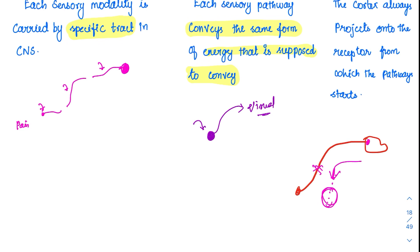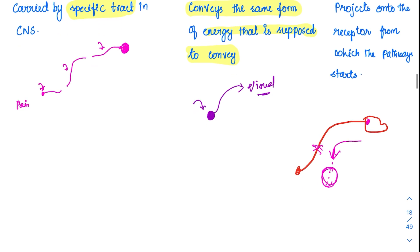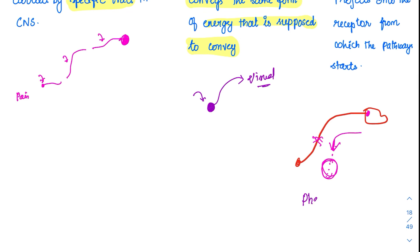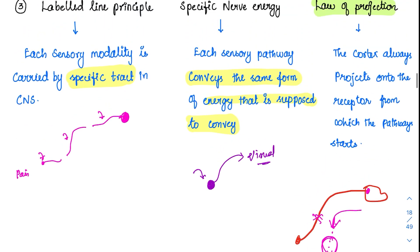The classical example here is phantom limb pain. Phantom limb pain is based on the law of projection, because the cortex always projects to the receptor from which it originates. Even if the hand is cut and the nerve is stimulated, the person will think their hand is still present and will feel pain from it. This is the basis of phantom limb pain.